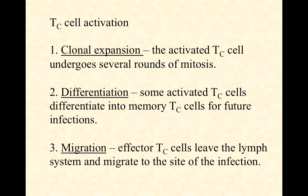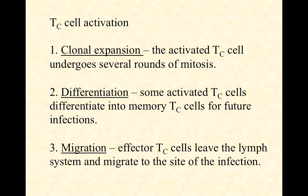And then finally, migration. This is unique to the cytotoxic T cells. The helper T cells stay put right where they are, and they secrete their cytokines and essentially chemically talk to everybody. The cytotoxic T cells, though, their job is to go find the infection and kill infected host cells — your cells that have pathogen inside them. So they have to leave and migrate. The effector pool will migrate away from the lymph system, away from lymphoid organs and the lymph nodes, and they'll migrate to the site of the infection using chemotaxis and following gradients until they find that particular location.